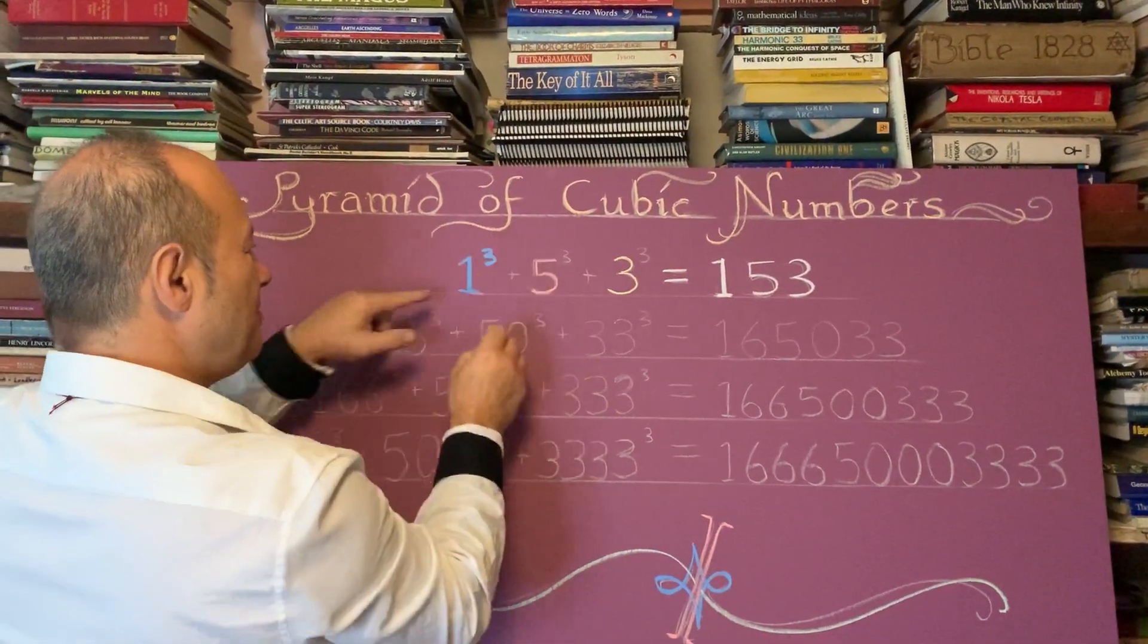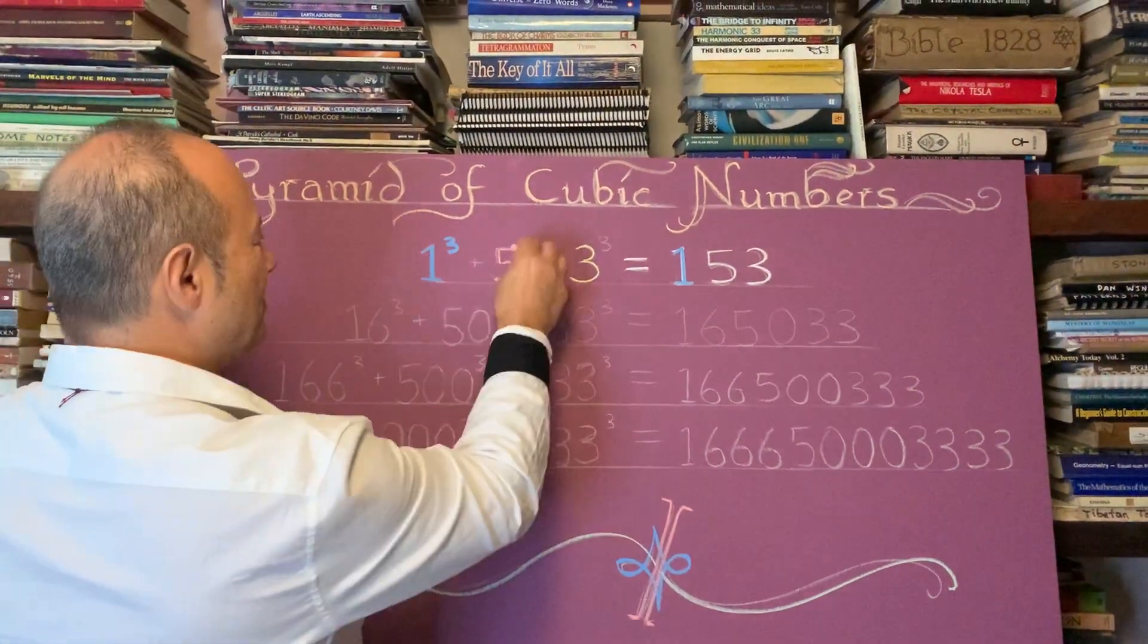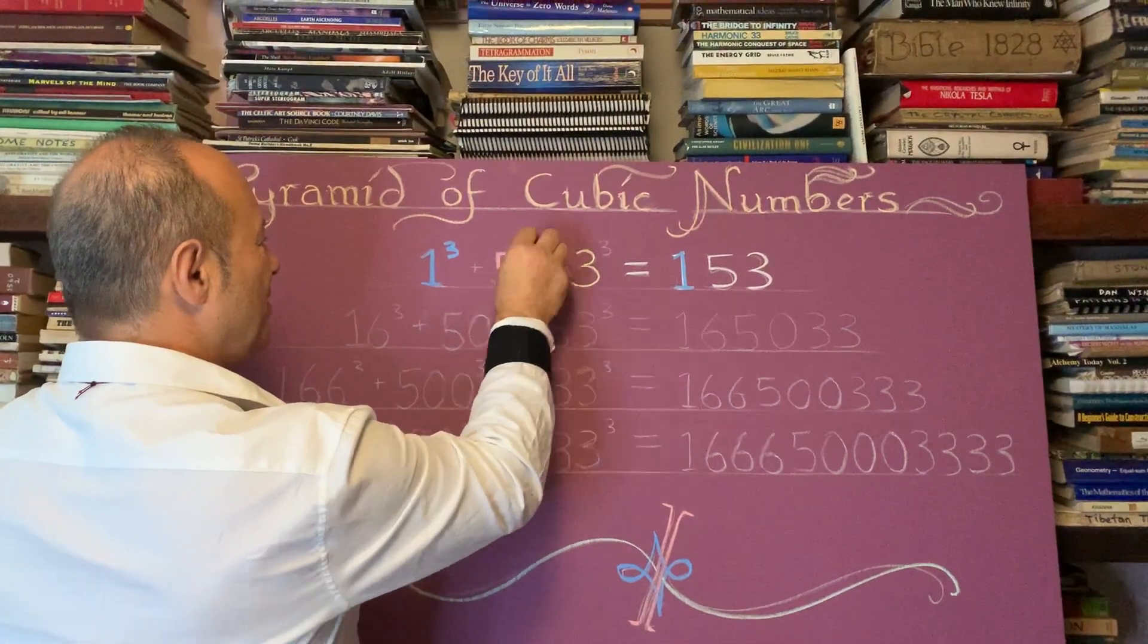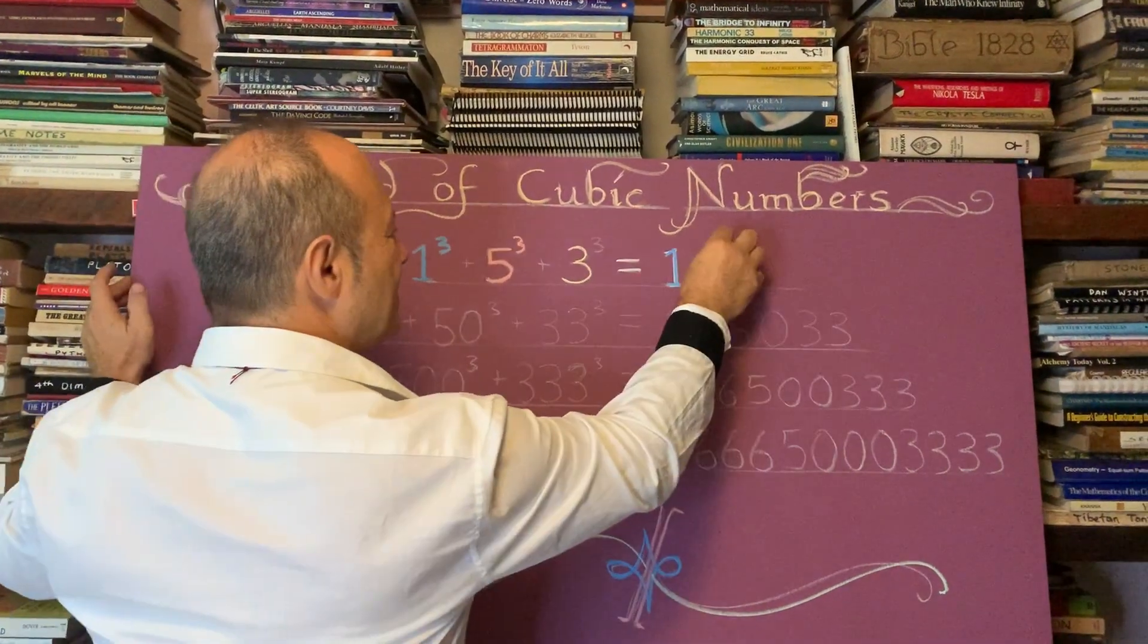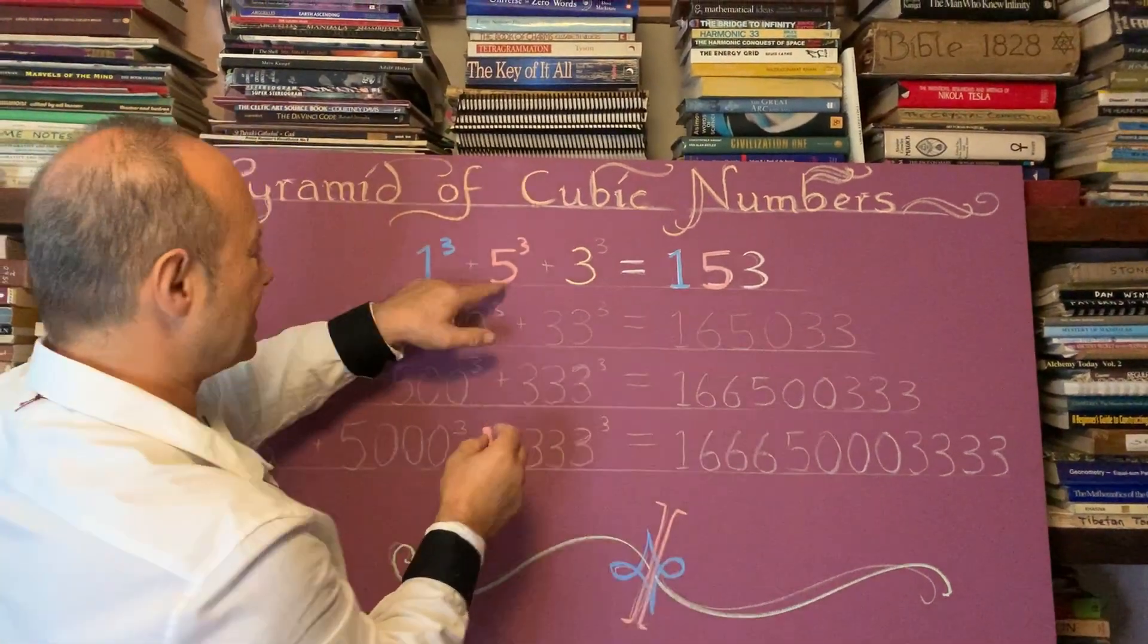So 1 cubed gives the 1, and then in pink I'm going to do all the numbers with 5. 5 cubed is 125, 1 plus 125.